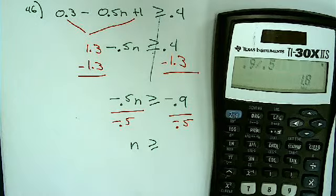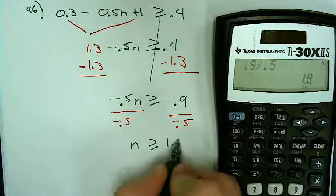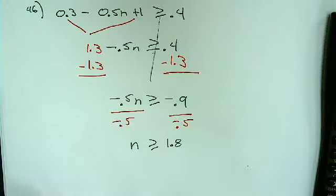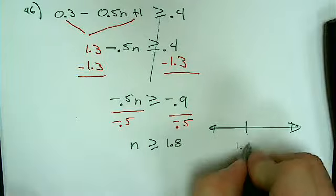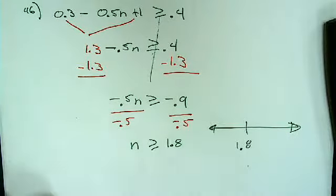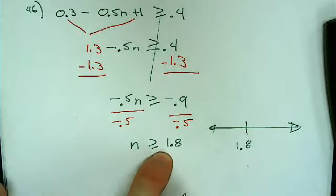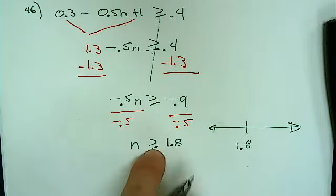Thank you. And so I have n is greater than or equal to 1.8. Graph that, so there's 1.8. Can you, real quick, since we're talking now, open or close dot?